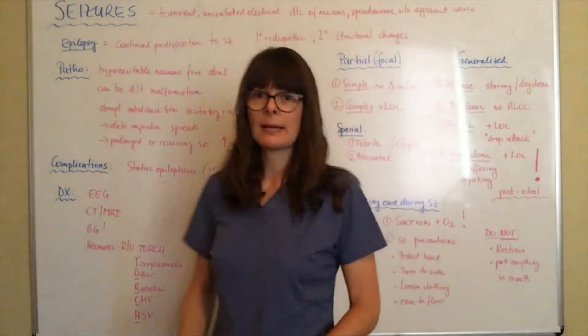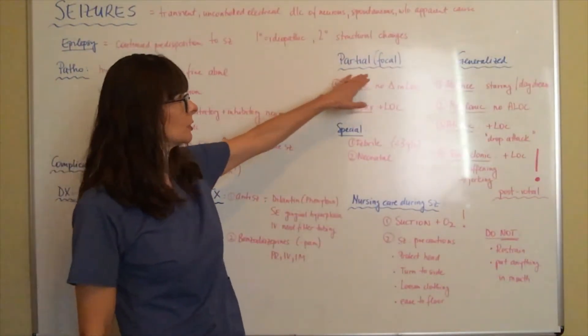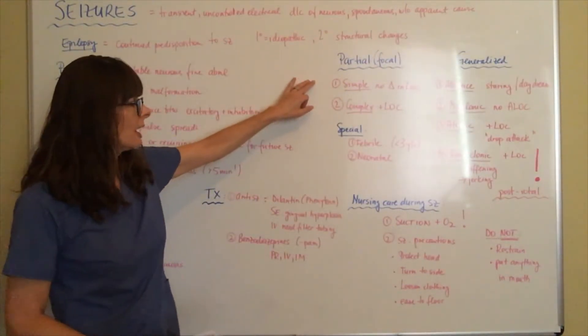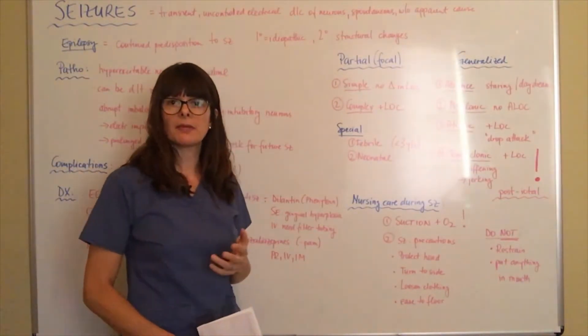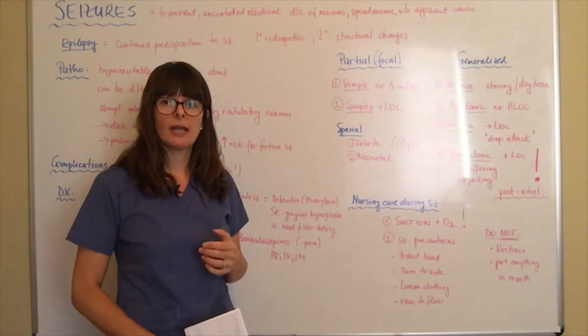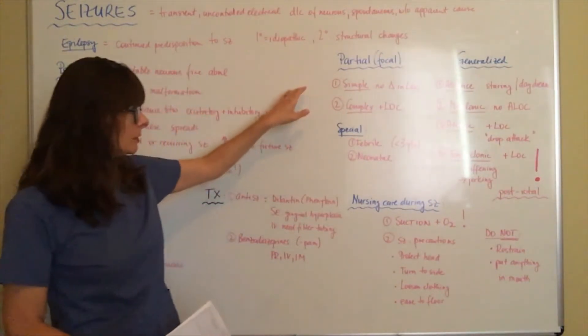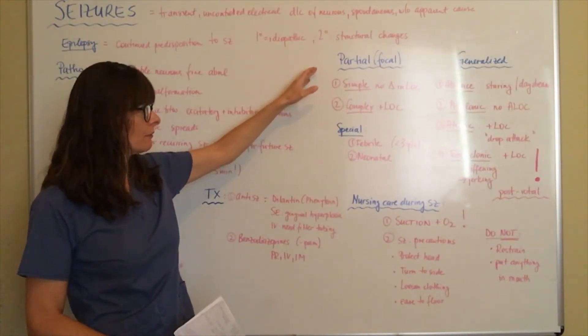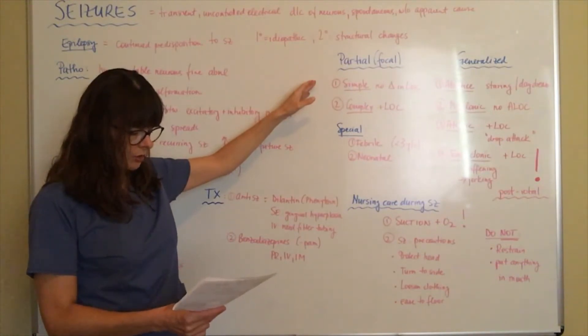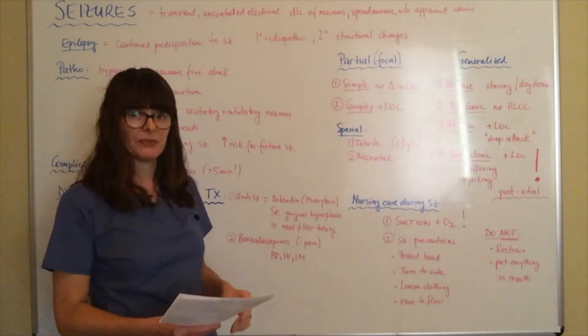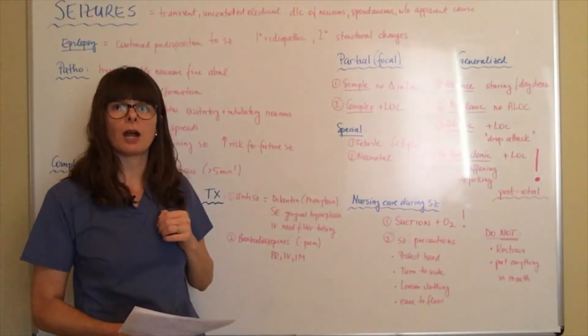Let's look at the different types of seizures. We need to distinguish between partial, which are also called focal, and generalized seizures. Simple seizures: there is no change in level of consciousness. This is something we have to keep in mind whenever we talk about seizures - is there any alteration in consciousness, any loss of consciousness, changes in mental status? For simple partial focal seizures, there is no change in consciousness. There might be a sudden change in mood. The patient might all of a sudden hear things or taste things or see things that are not real.